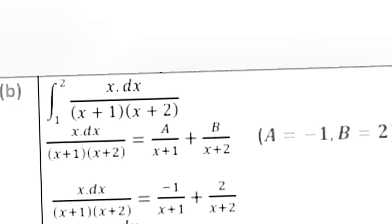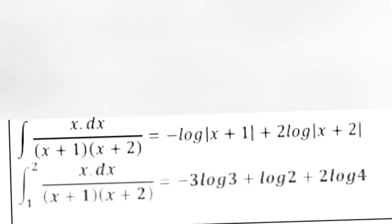Question 17B: Evaluate ∫₁² x dx / [(x+1)(x+2)]. Using partial fractions: x/[(x+1)(x+2)] = A/(x+1) + B/(x+2). ∫x dx / [(x+1)(x+2)] = -log|x+1| + 2 log|x+2|. Evaluating from 1 to 2: = -3 log 3 + log 2 + 2 log 4.